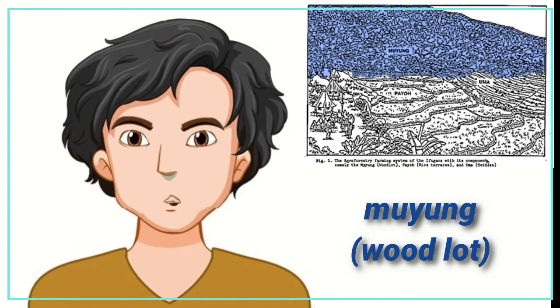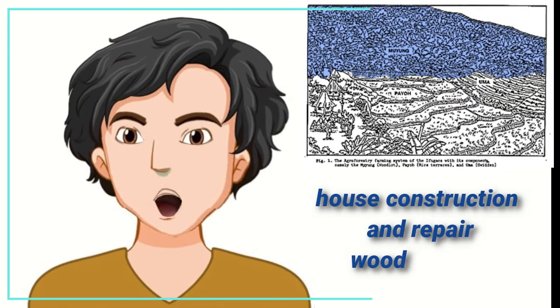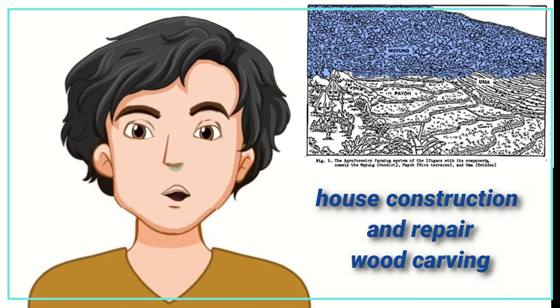The Mwiuung is an area where trees are grown. It is a source of wood for house construction and repair and wood carving.